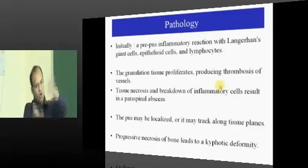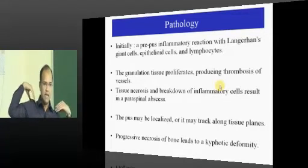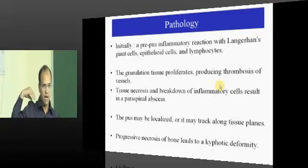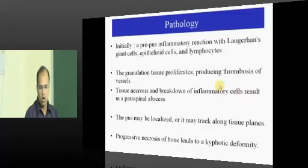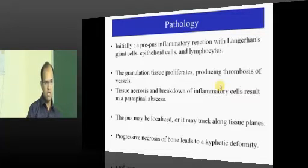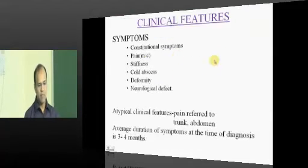Similarly, in cervical spine tuberculosis, the cold abscess may track down into the hand. It will go along the path and present somewhere else. In the dorsal vertebra, a cold abscess can track along the intercostal nerve and present in the axilla or on the anterior aspect of the chest wall. You may see a tumor-like collection of pus anteriorly while the actual pathology is posterior. You should know all the sites of cold abscess presentation.